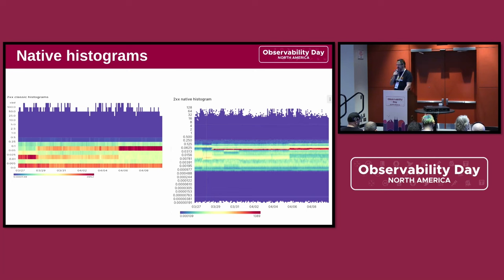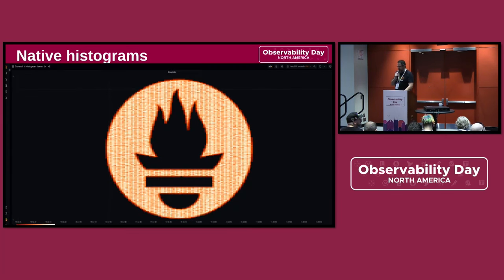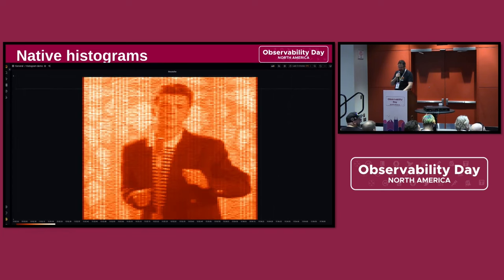With native histograms, the short version is everything just happens as if by magic. Just enable them and you'll see actual high-resolution things — high enough resolution that you can do things like this, if you so choose, or obviously also this.